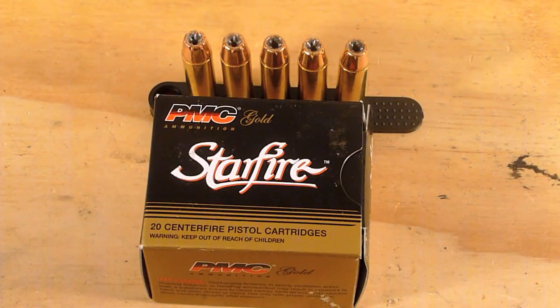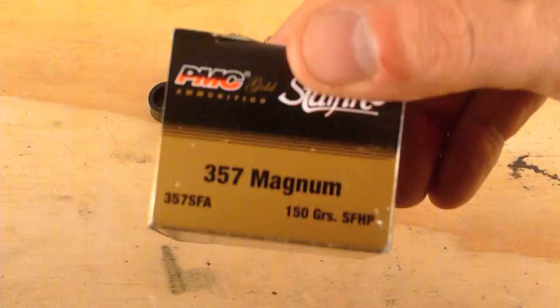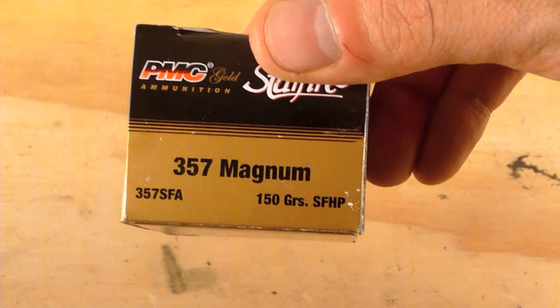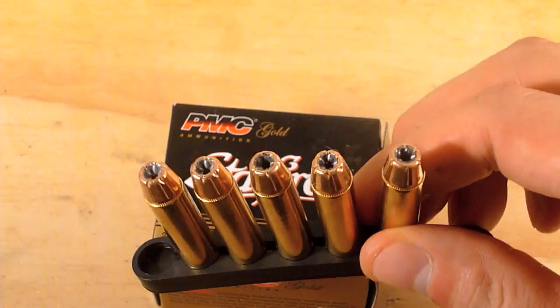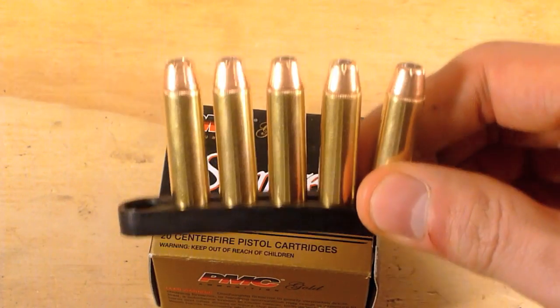Today's test is going to be of PMC's Starfire round. This round is chambered in .357 Magnum, and it's a 150 grain bullet with a jacketed hollow point. It features a brass casing as well.